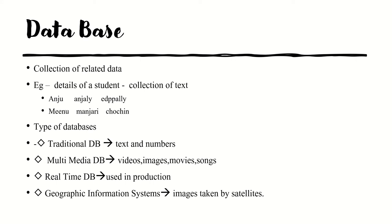For example, in the case of a college, the college wants to store all the information about students — like student name, register number, admission number, address, phone numbers, and date. In that case, we represent each of this data as numbers or text. That is a traditional database. In a multimedia database, the data is in the form of images, videos, and audios. That type of database is called a multimedia database.